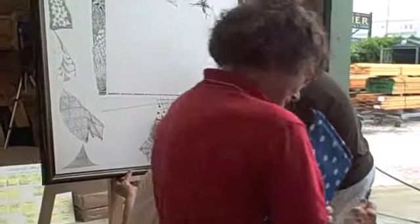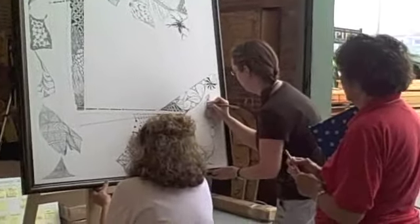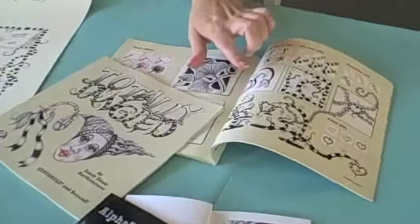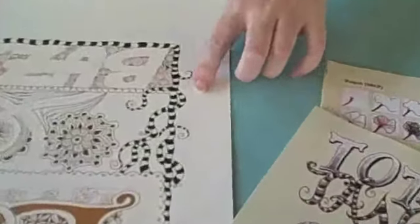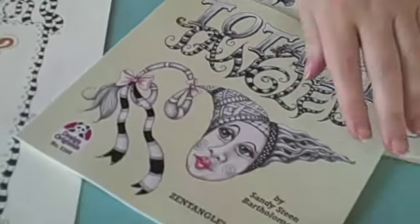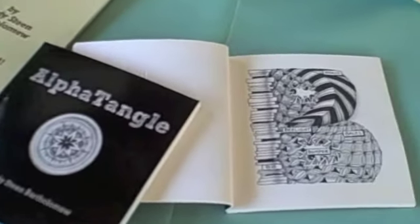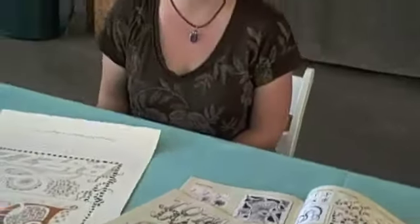Here members of the class are working on a group zentangle. I am Sandy Steen Bartholomew, and this is my book, Totally Tangled. Betelgeuse is my favorite pattern from my book, and this is an example of Betelgeuse meandering all over the page. And this is my little book, Alpha Tangle, that I did that has each letter of the alphabet illustrated with different zentangles starting with the same letter.